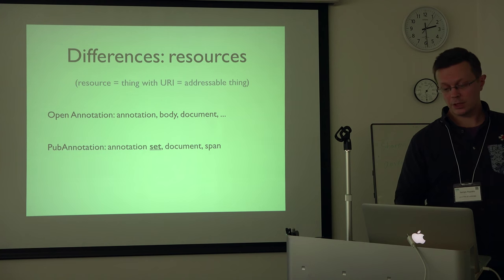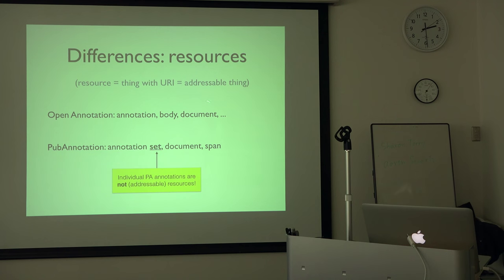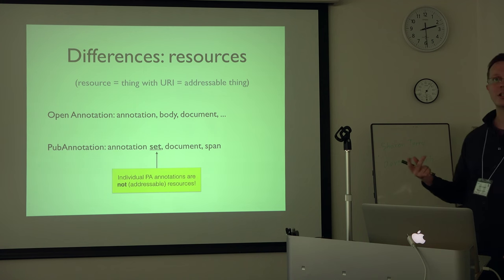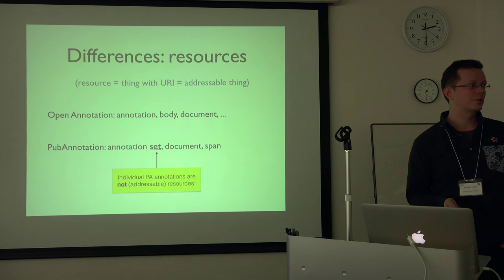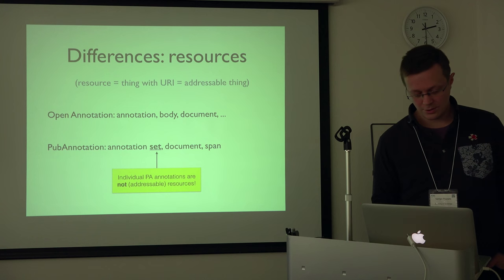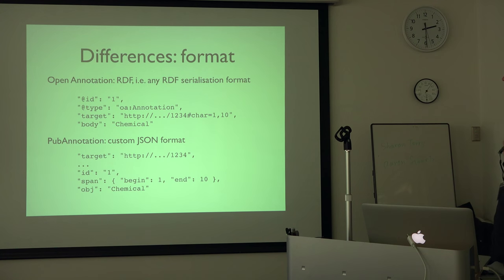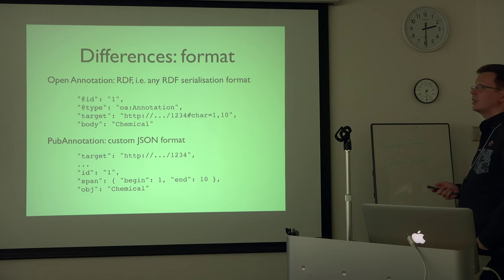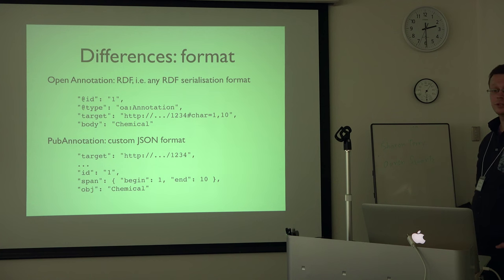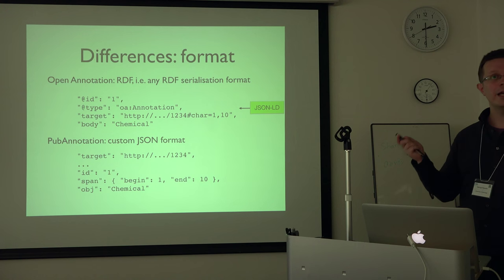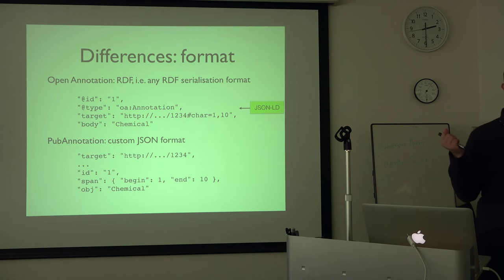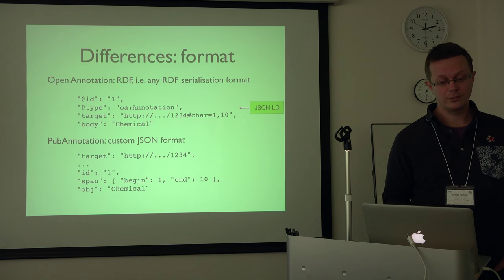Another big difference is that in open annotation, everything has a URI — everything is basically a resource in the RDF sense. Pub annotation defines a way to reference annotation sets but not individual annotations, which is something I would criticize in the design. Finally, regarding format differences: open annotation is RDF, so you can use any RDF serialization format. The example here is JSON-LD, which if you hate RDF, you might want to look into — I think JSON-LD is actually the first sensible serialization format for RDF. Pub annotation uses a custom JSON format.